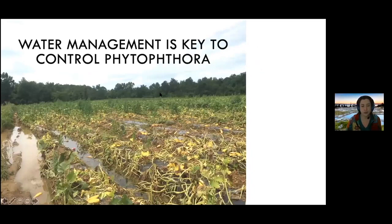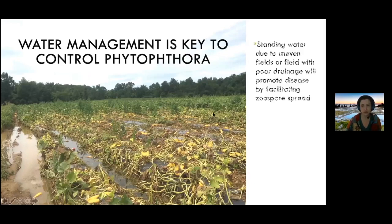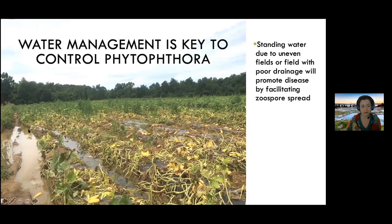Water management is super important to control Phytophthora, because remember it is an algae cousin and a water lover. This is a squash field here in North Carolina that I visited a few years ago — having fields that drain well and are more even is a good idea so you don't have water staying there for a long time, especially if you already have the pathogen. Infected fruit differentiates into zoospores, and they swim down the row with the water, so you can almost track the spread of the pathogen based on where the water is going.